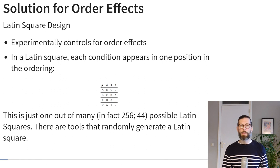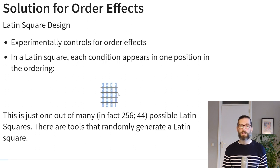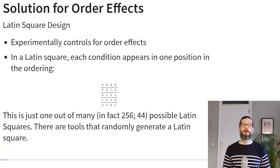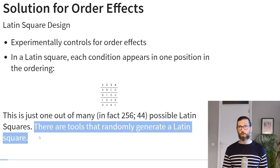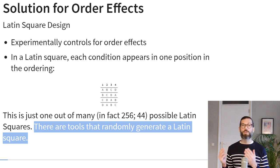Here's an example with four measurement occasions and four treatments A, B, C, and D. You mix up the order so each condition appears in only one position: the first order would be A, B, C, D; the second B, C, D, A; the third C, D, A, B; and the fourth D, A, B, C. This is just one potential Latin square — thinking about combinatorics, there are many possible ones. Four by four conditions gives 256 possible Latin square designs, and there are tools that will randomly generate one for you. The important thing is that this accounts for some of the order effects.